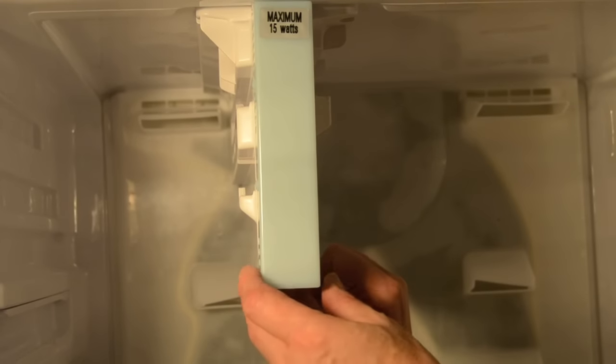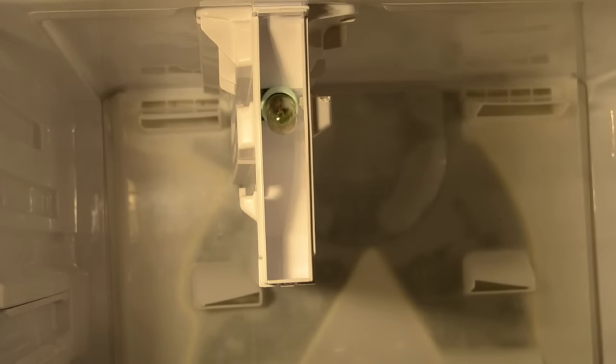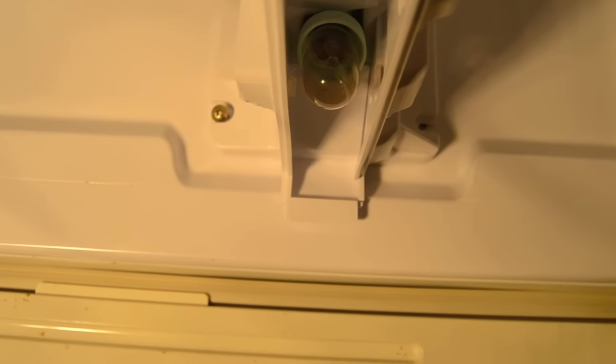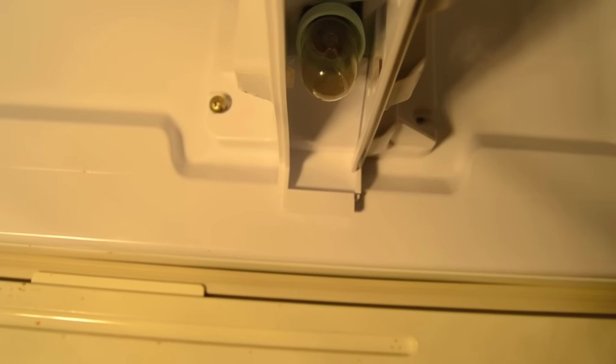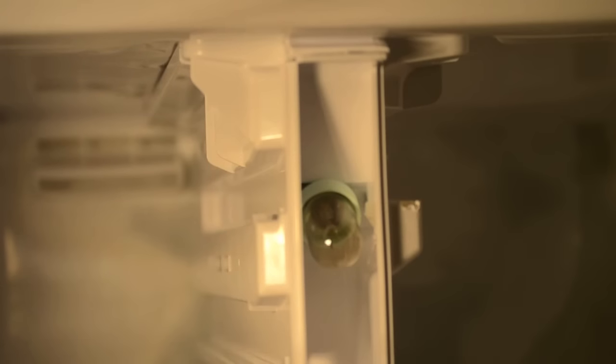Remove the freezer light cover by depressing a tab on the bottom, then pulling the bottom of the piece forward. To remove the drawer support rail, that's the piece with the freezer light in it, first remove two screws holding it to the ceiling of the freezer. Then gently but firmly slide it forward.